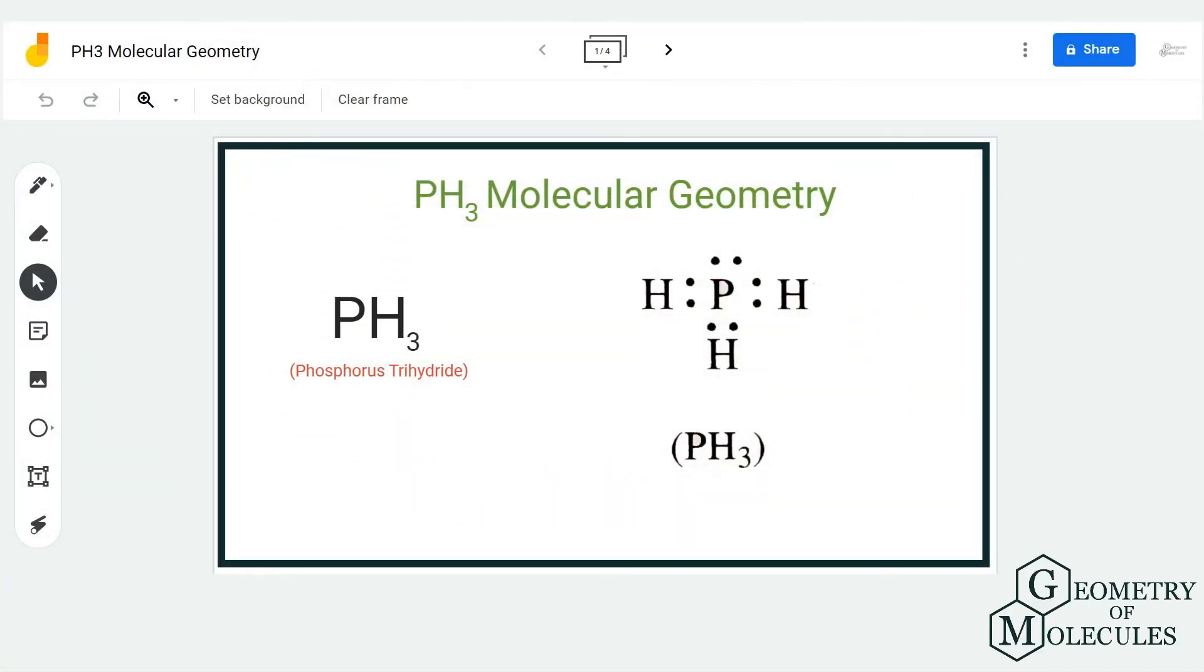Hi guys, welcome back to our channel. In today's video we are going to look at the molecular geometry for PH3 molecule. It's a chemical formula for phosphorus trihydride and it is made up of one phosphorus atom and three hydrogen atoms.